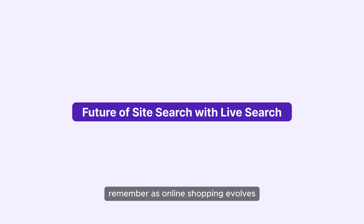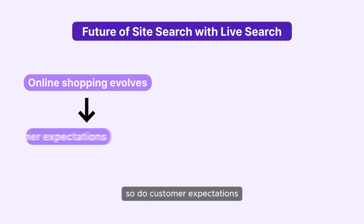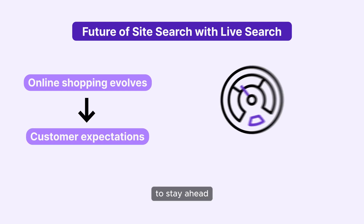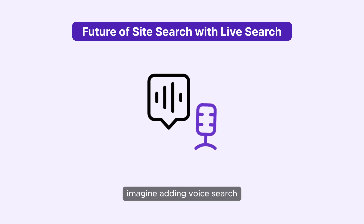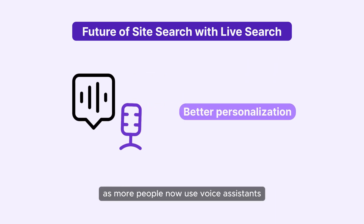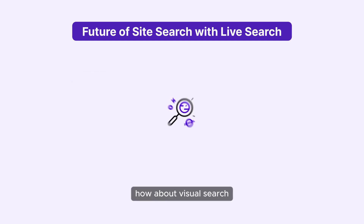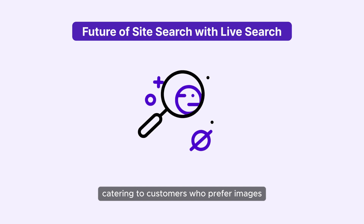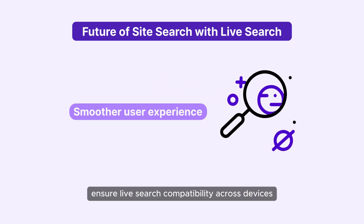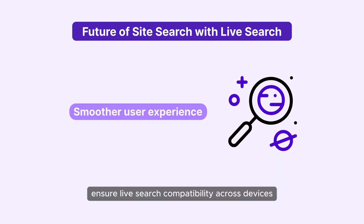Remember, as online shopping evolves, so do customer expectations. To stay ahead, keep enhancing your site search. Imagine adding voice search, as more people now use voice assistants, or better personalization with machine learning. How about visual search, catering to customers who prefer images? Ensure live search compatibility across devices for a smoother user experience.